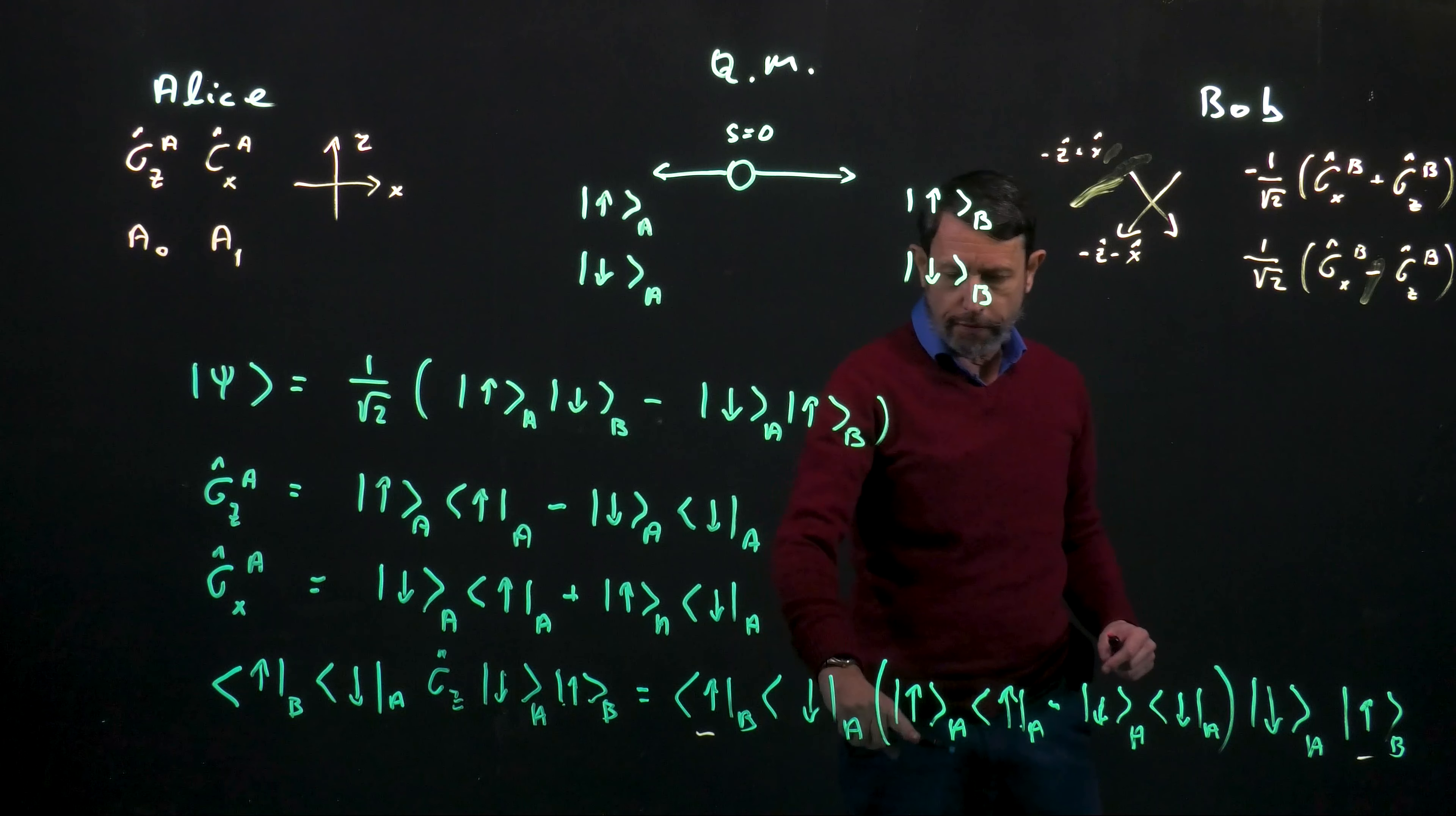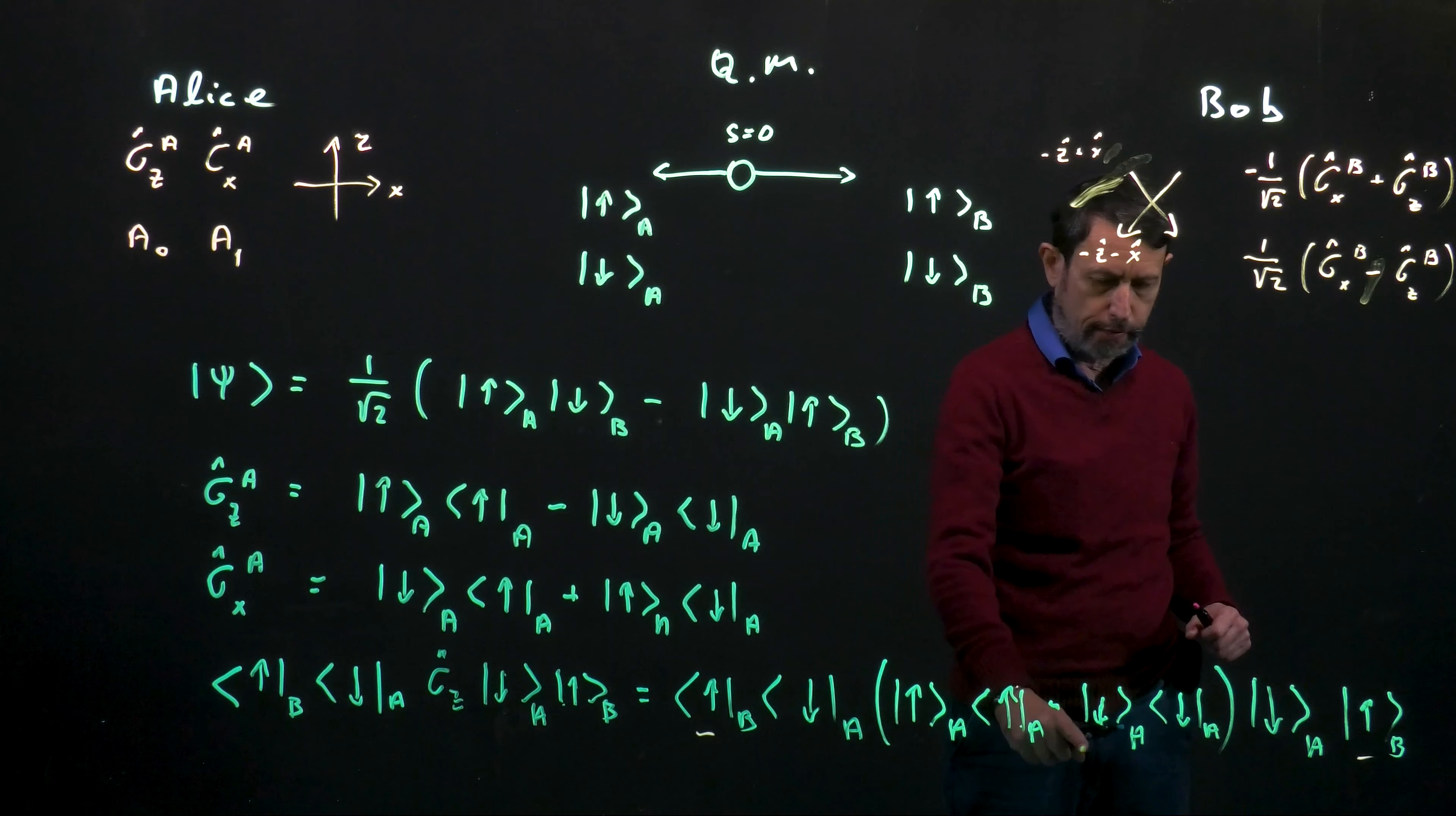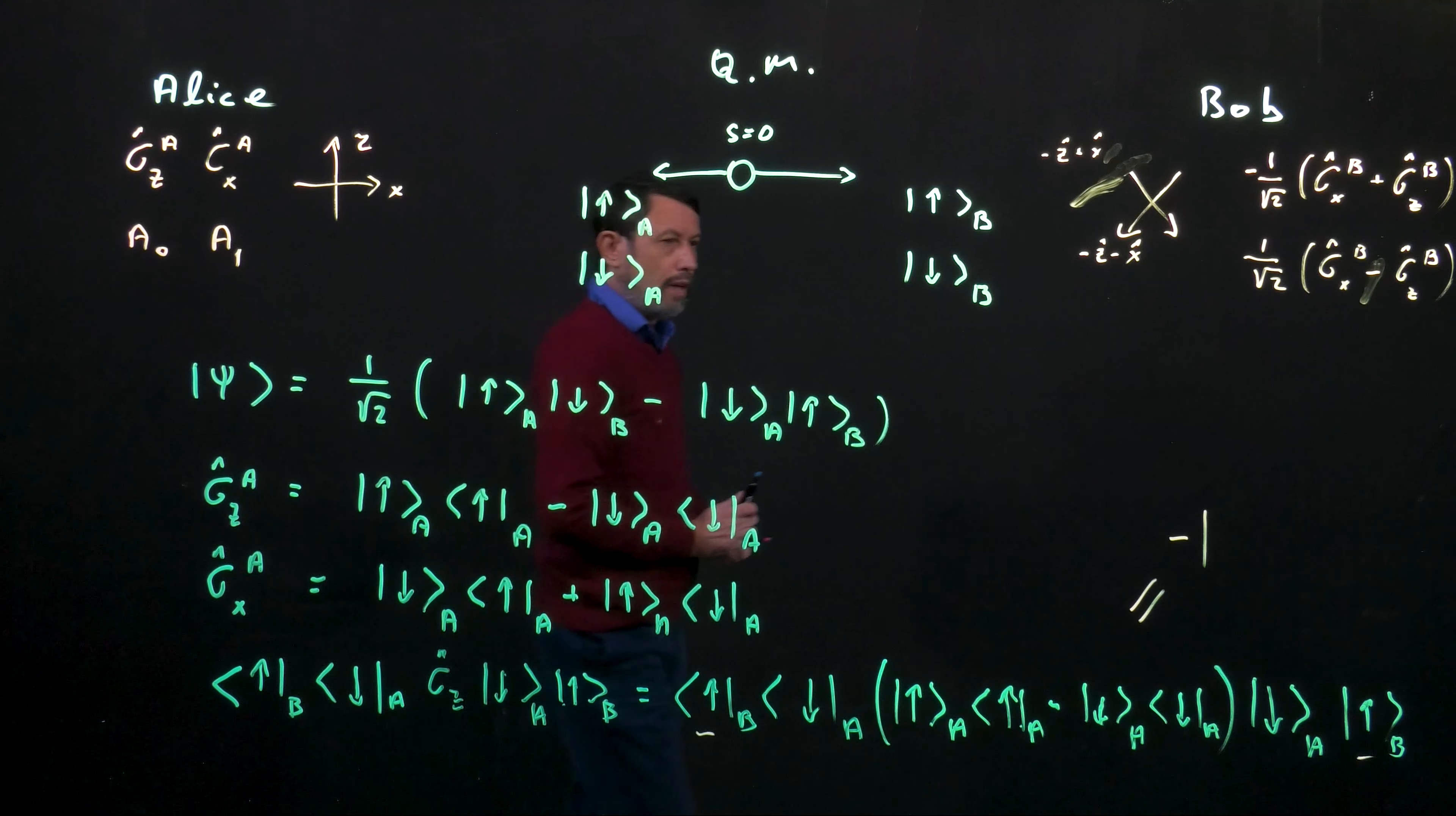If I'm looking on the first term, here we have spin down, spin up. So the result of the scalar multiplication is 0. Here I have spin down, spin down gives me 1, times spin a, spin a gives me minus 1. So the result that I get is minus 1 as expected.